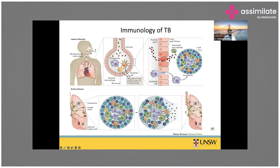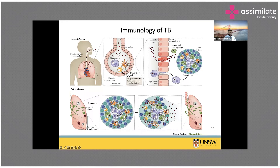When the alveolar macrophages cannot contain the infection, they recruit monocytes and dendritic T cells for help. Despite this immune response, Mycobacterium tuberculosis can outnumber the immune system and breach the alveolar spaces. The body then forms a shell — T cells, B cells, and macrophages surround the bacilli, forming a granuloma, and the infection enters a phase called latent TB infection.